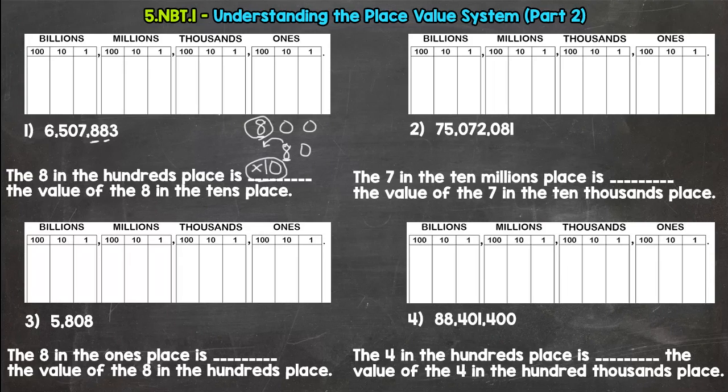Because there are some that switch up. We get smaller in value. Hint, that's number 3 and 4. But let's check number 1. The 8 in the hundreds place is 10 times the value of the 8 in the tens place. That is true. We jumped one spot to the left, increased our value by 10.